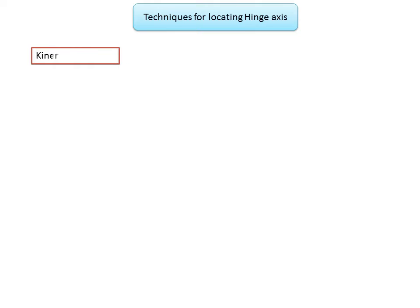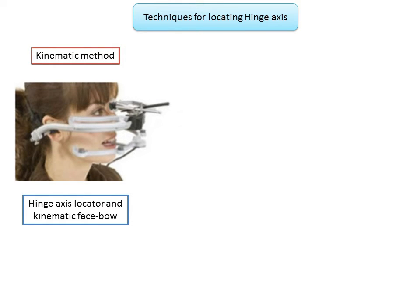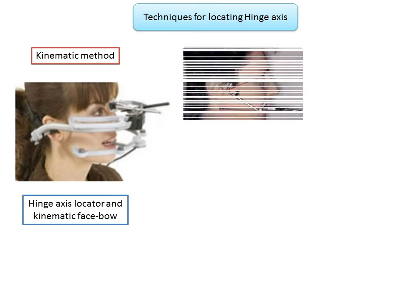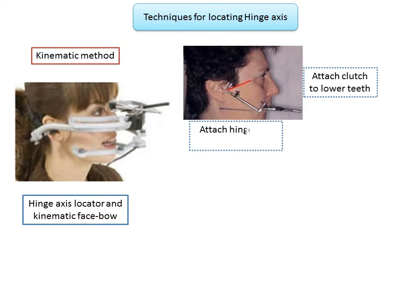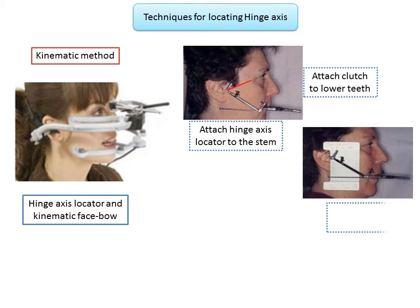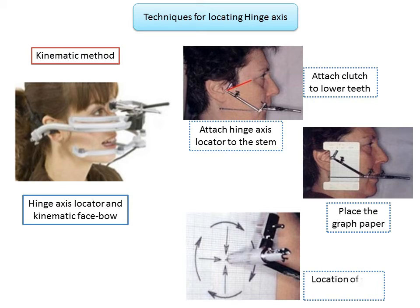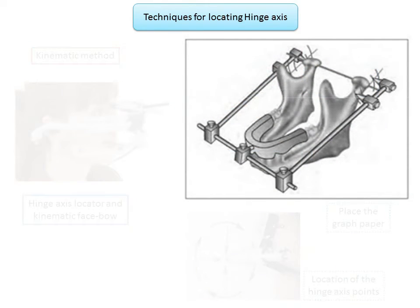Next, the kinematic method of locating the hinge axis, which allows precise determination of the patient's terminal hinge axis. The patient is seated upright, away from the headrest. A clutch is attached to the mandibular teeth or occlusal rim and stabilized using impression compound. The graph pad is positioned over the condyle and the crossbar is attached to the clutch by a universal clamp. The axis indicator is attached and positioned over the graph pad; it is adjusted so that when the patient opens and closes the mouth, the indicator no longer moves in an arc but rotates on a single point. The graph pad background is then removed and that point is marked on the patient's skin.